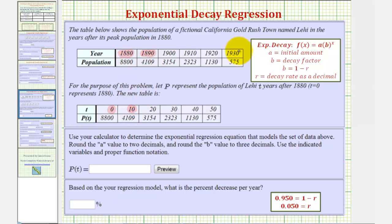We want to use the calculator to determine the exponential regression equation that models the data. We want to round A to two decimal places, where A would be the initial amount or initial value. We want to round B to three decimal places, where B would be the base, or because we have exponential decay, B is a decay factor. Also notice that B is equal to one minus R, where R is a decay rate expressed as a decimal.